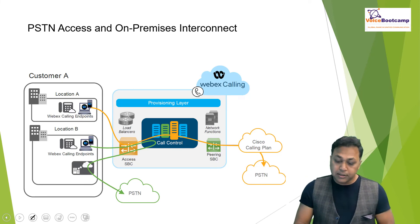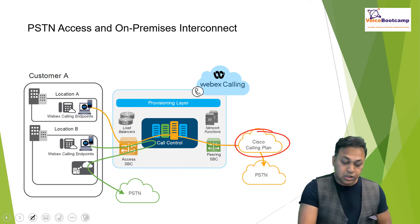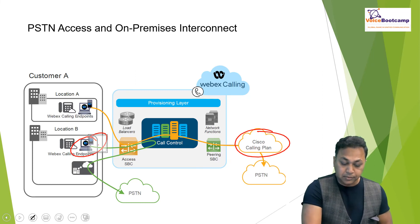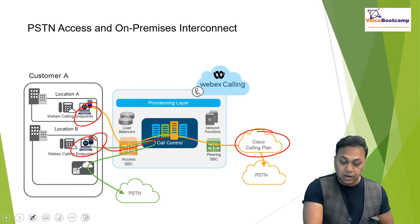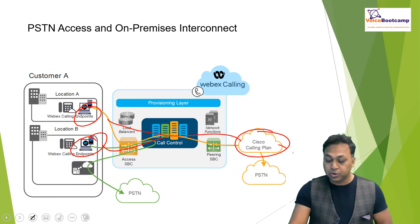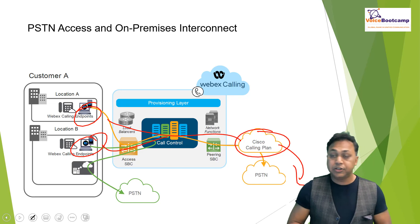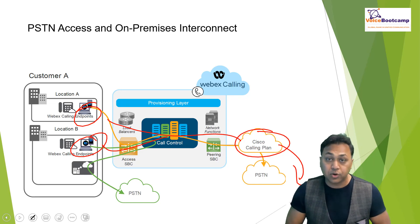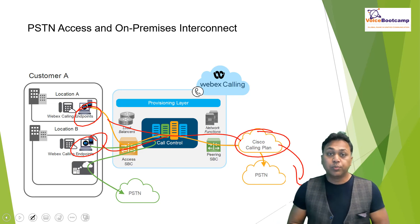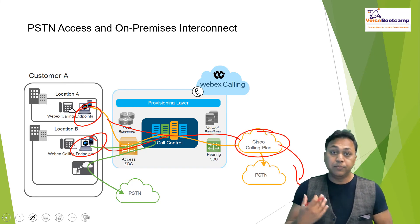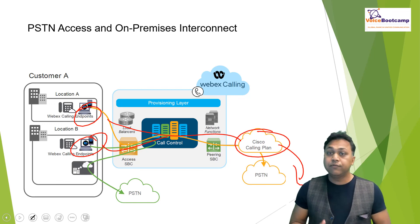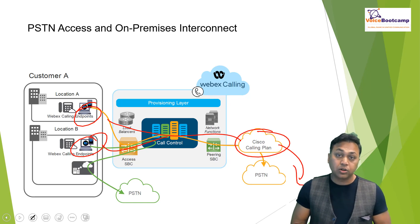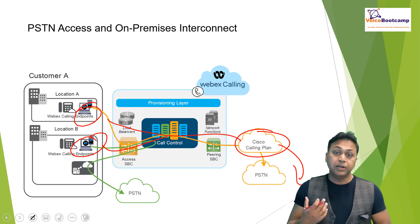The Cisco Calling Plan, as you can see right here, allows you to send a signal from an endpoint to the Webex Calling, which will use the Cisco Calling Plan to communicate with PSTN, whether to call India, UK, or any part of North America. Cisco will provide a package and will either bill you on bulk minutes, or they can bill you per country that you dial, or for local calls, they may provide you a DID with an online plan.